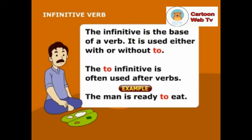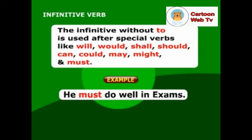The infinitive is the base of a verb. It is used either with or without 'to'. The to-infinitive is often used after verbs. Example: the man is ready to eat. The infinitive without 'to' is used after special verbs like will, would, shall, should, can, could, may, might and must. Example: he must do well in exams.